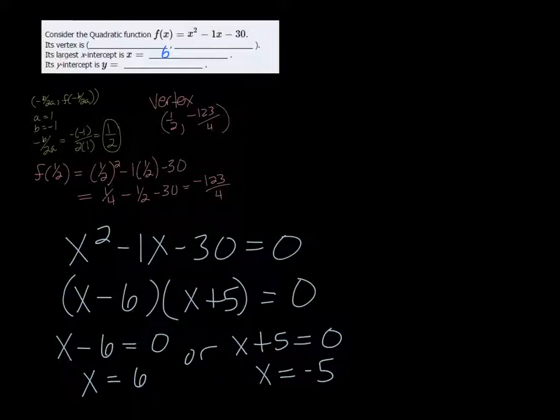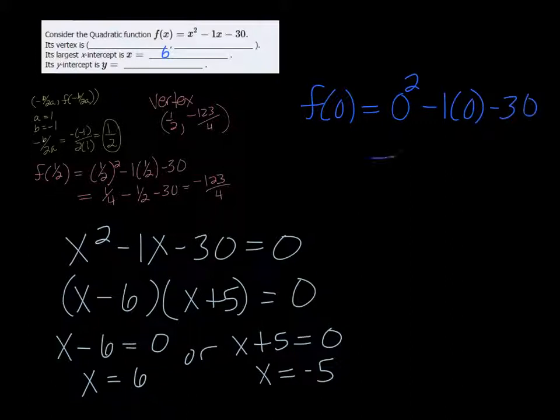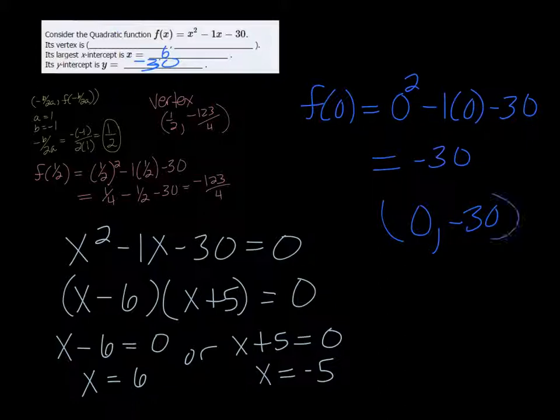Now, the y-intercept is where you're putting 0 in for x. So f of 0 would be 0 squared minus 1 times 0 minus 30. And that's just equal to negative 30. So the y-intercept, it says is y equals, you're just going to put minus 30 in there. An intercept is technically a coordinate. It would be 0, negative 30. But it's just asking you for the y value there.